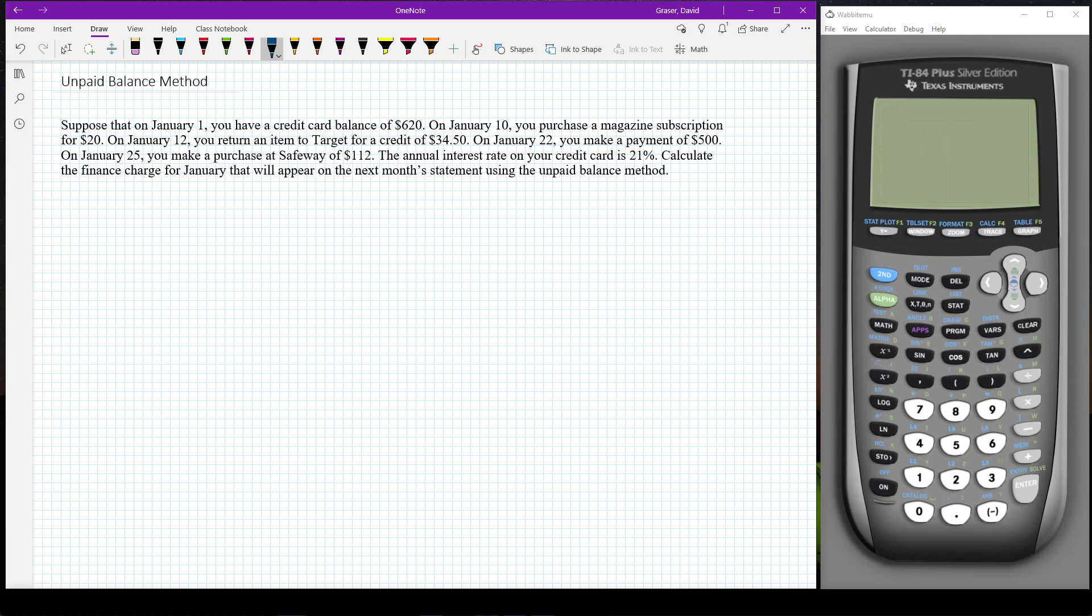Now the annual credit interest rate on your credit card is twenty one percent and we want to calculate the finance charge for January that will appear on the next month's statement using the unpaid balance method.